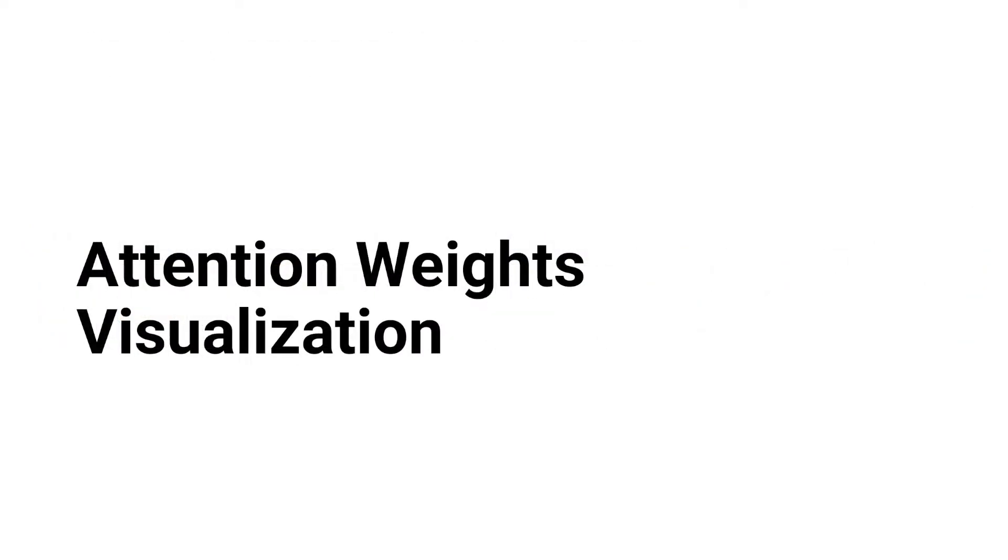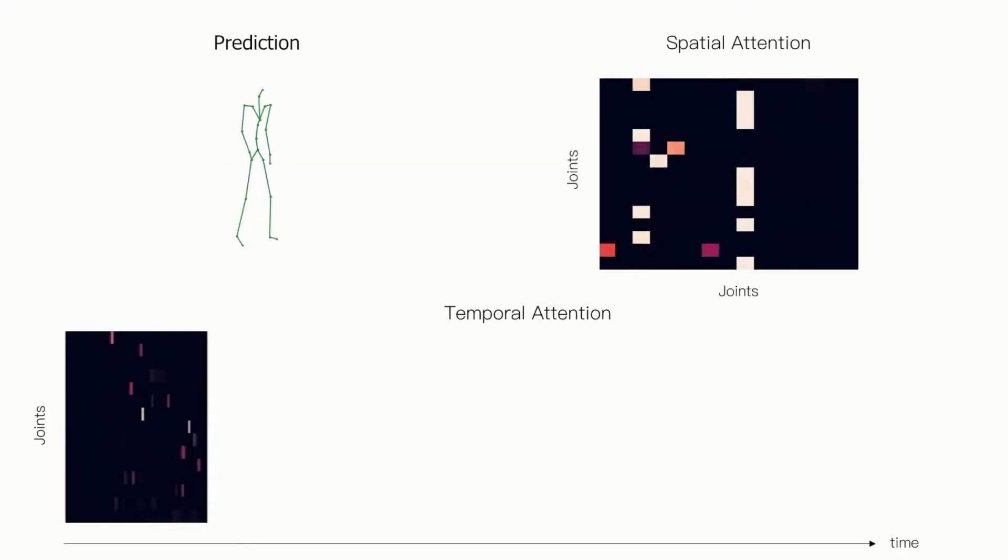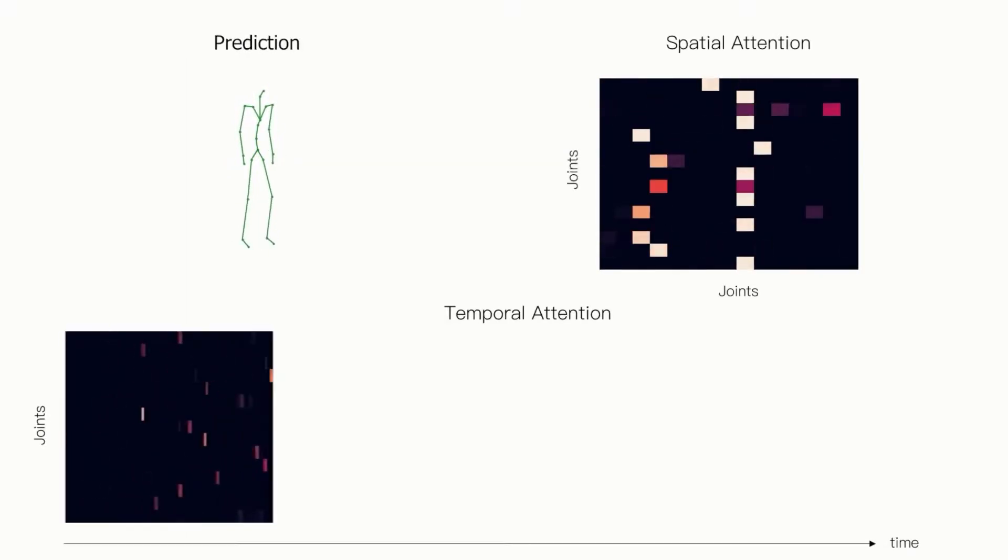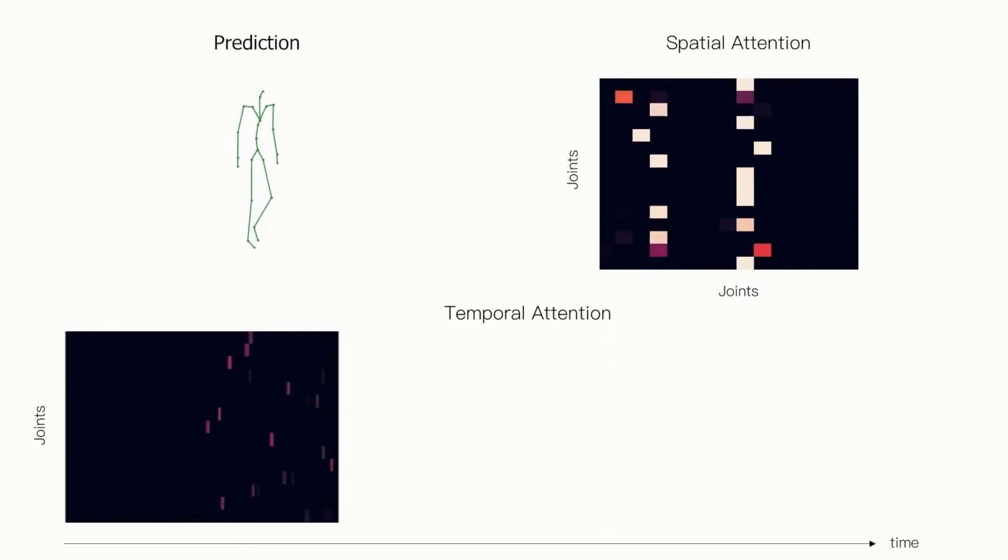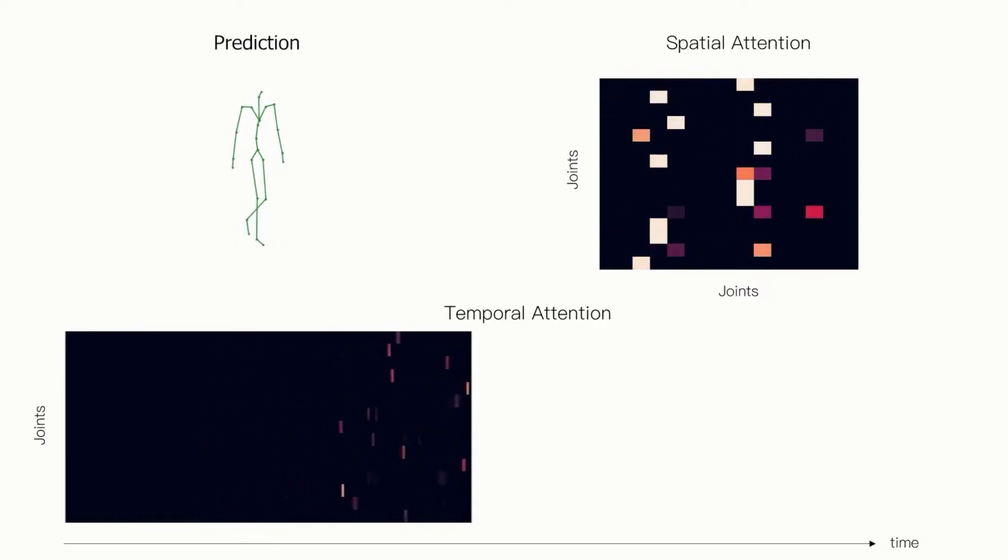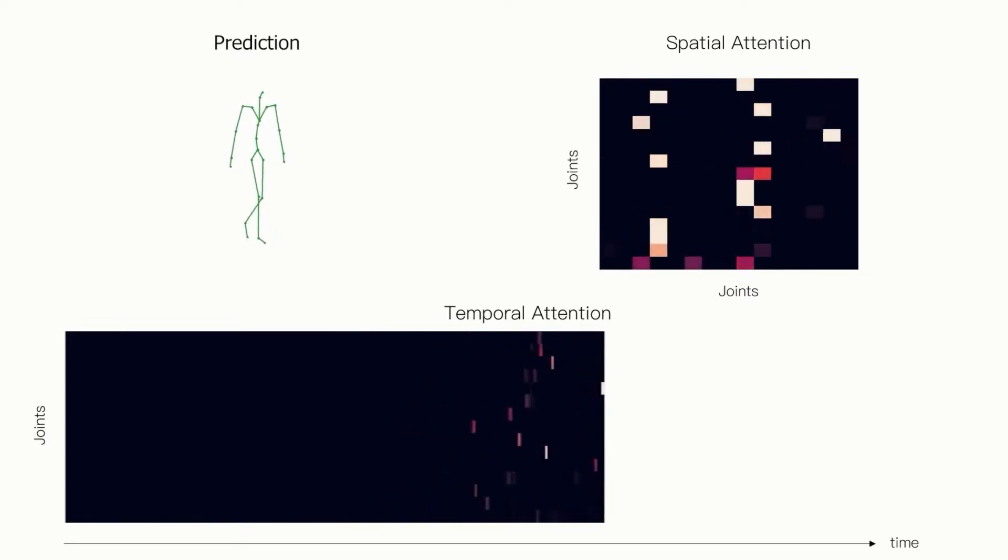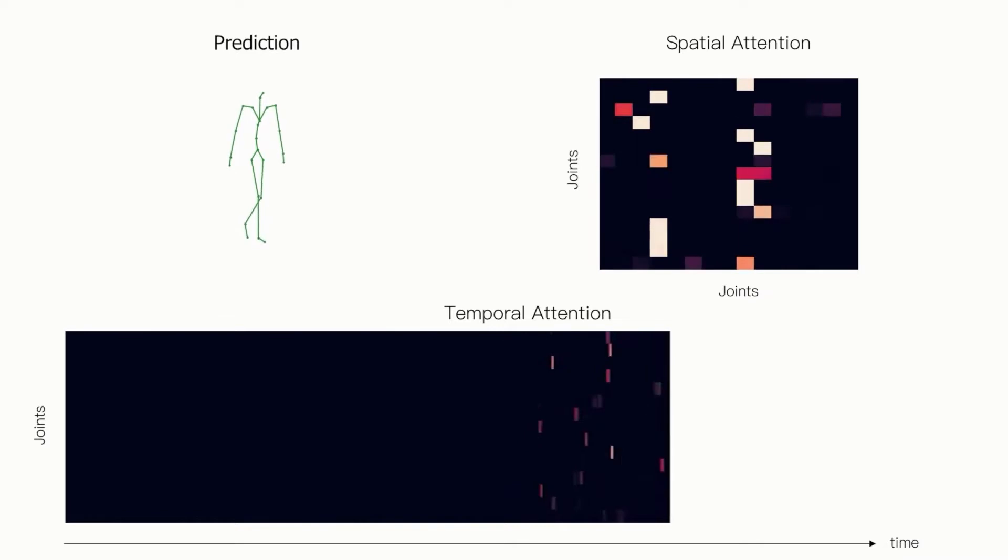The autoregressive ST transformer not only reveals the dependencies between joints and frames, but also provides insights into how the model forms predictions. Here we visualize the changing attention weights while the model predicts the seed sequence into the future. For every prediction step, the temporal and spatial attention weights are recalculated, allowing for modeling of the skeleton configuration dynamically.